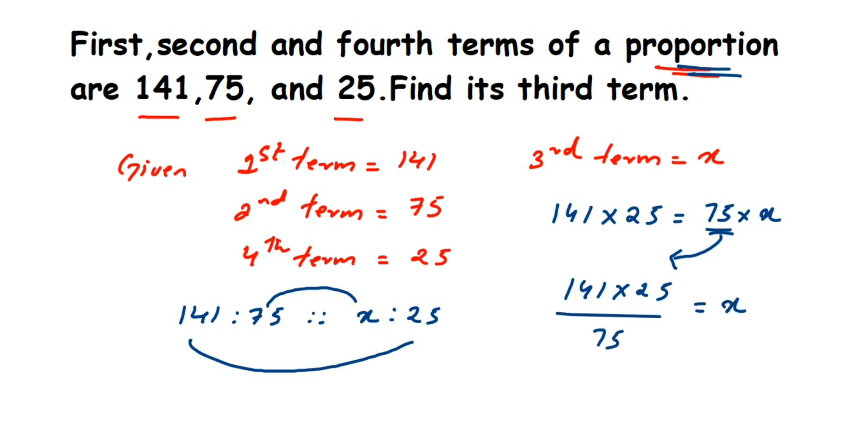I'm going to cancel the numbers. 25 and 75: 3 goes into 75 three times, leaving 25 as 1. Then 141 divided by 3: 3 sevens are 21, so we get 47. Therefore, x equals 47.